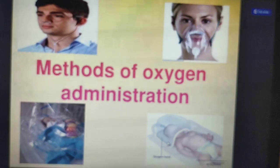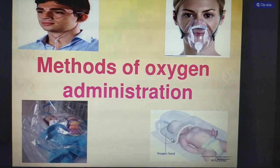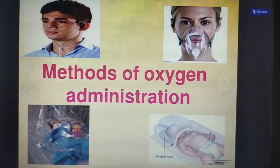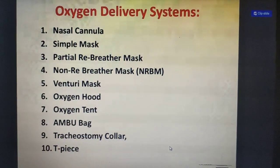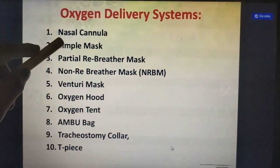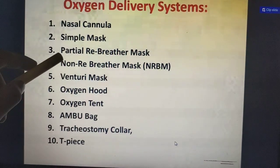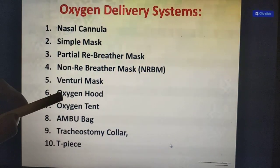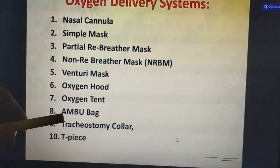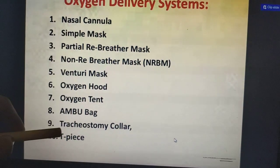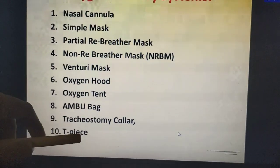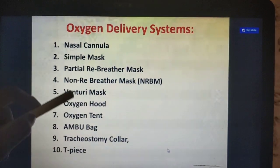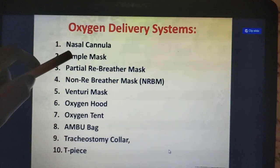Now we'll see the methods of oxygen administration. The oxygen delivery systems include: nasal cannula, simple mask, partial rebreather mask, non-rebreather mask, Venturi mask, oxygen hood, oxygen tent, Ambu bag, tracheostomy collar, and T-piece. For nursing students, the most important ones are nasal cannula, simple mask, and oxygen hood.